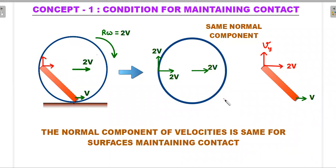Let's move forward. We'll start off with concept number one, which is not only important in this problem but also some other JEE style problems on constraints where the condition for maintaining contact between two surfaces is considered. Here if the rod is one surface and the hollow spherical surface is the second one, and if the contact is being maintained between the two on the left side of your screen, then you should be able to analyze that the normal component of the velocities for both these surfaces should be same.